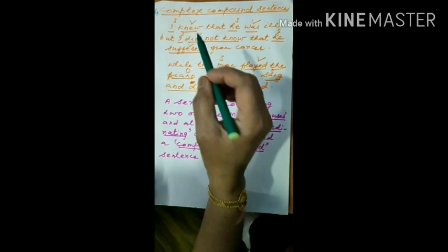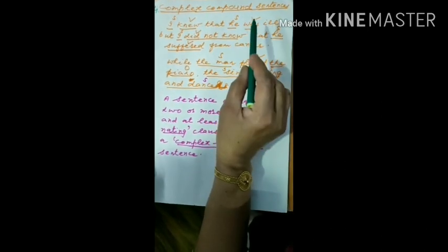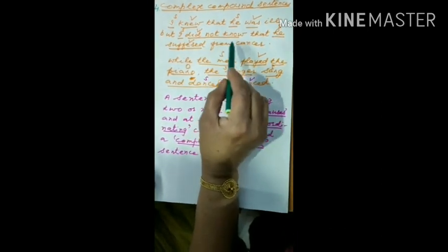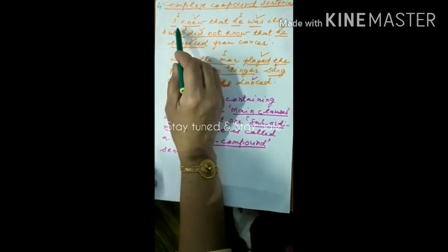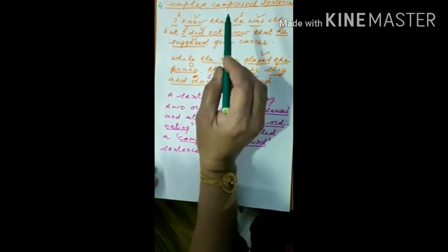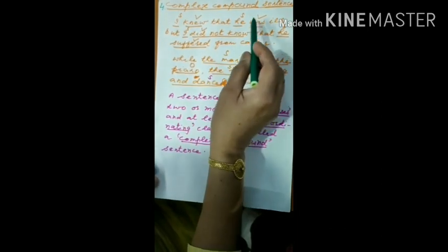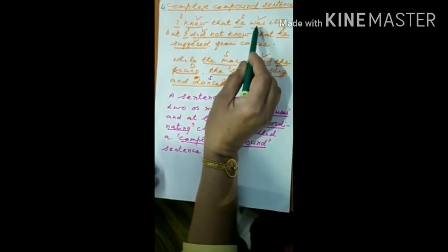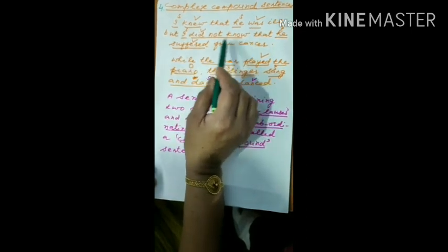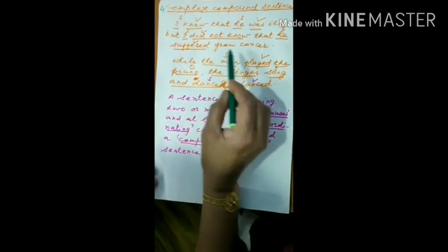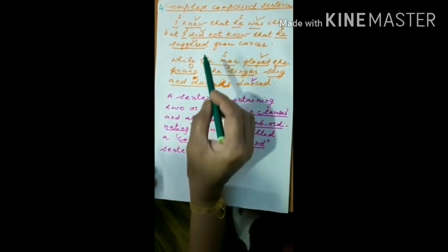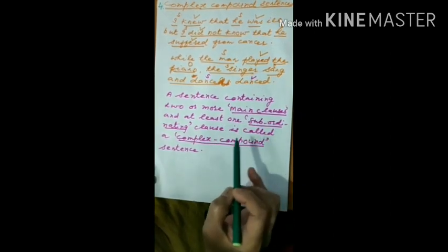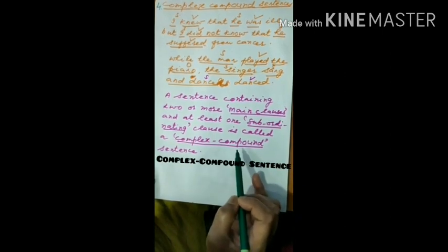Finally, we come on to the fourth type of sentences: compound-complex sentences. For example: 'I knew that he was ill, but I did not know that he suffered from cancer.' Here, 'I knew' is the main clause and 'that he was ill' is the subordinating clause, as it depends on the main clause for clear meaning. Again, 'I did not know' is the main clause and 'that he suffered from cancer' is the subordinating clause. A sentence containing two or more main clauses and at least one subordinating clause is called a compound-complex sentence.